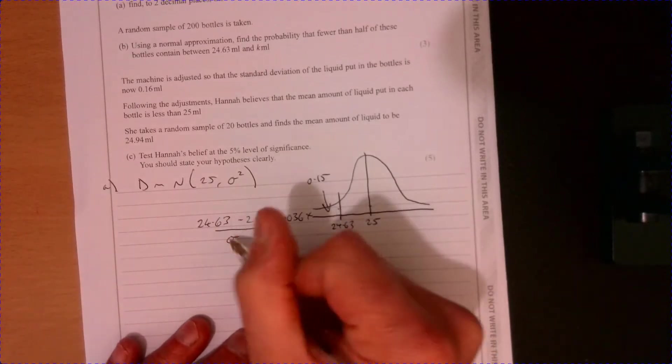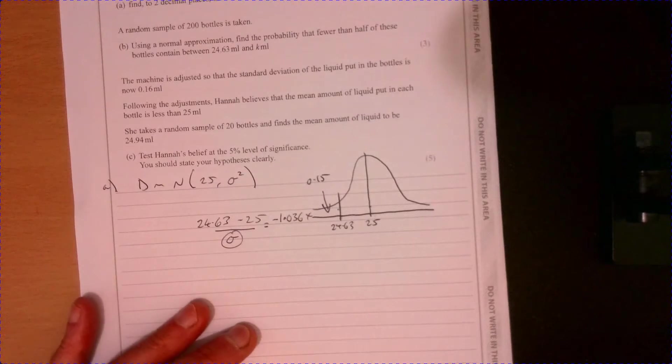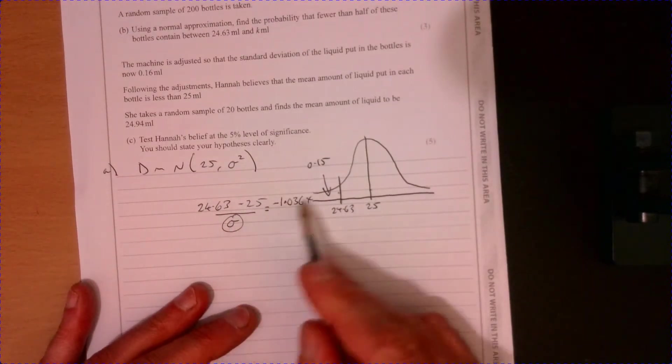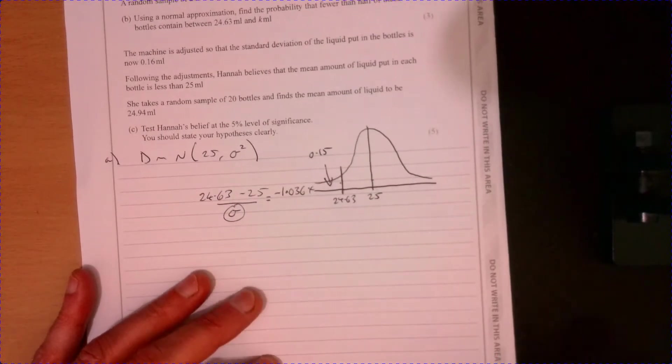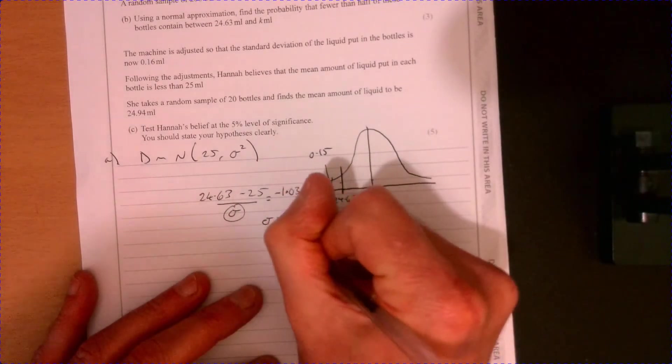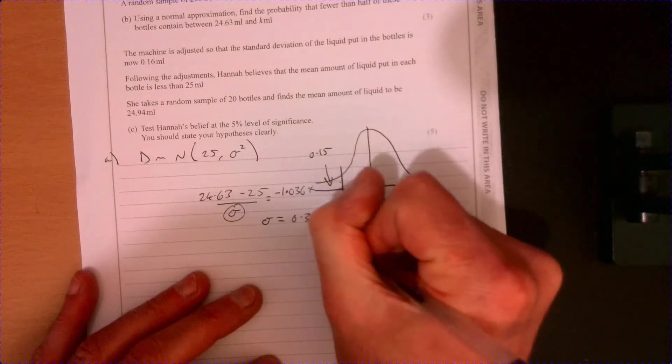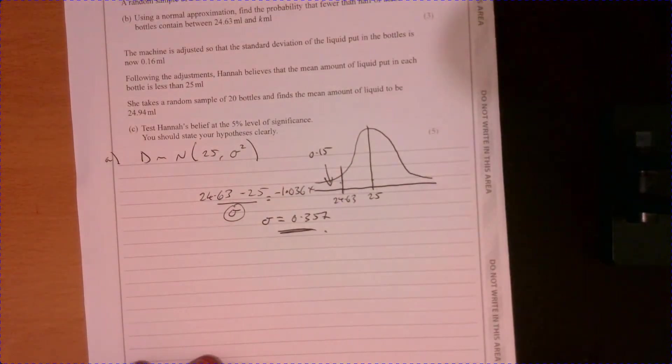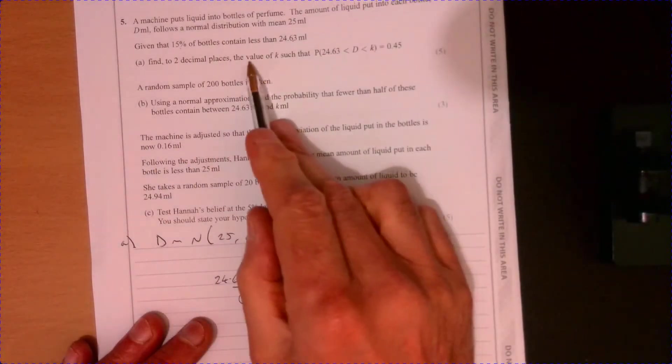From here, I can now work out what the standard deviation value is. Multiply by both sides. It's a simple bit of maths there. So you should be able to get standard deviation is 0.357. Now let's go back and actually see what the question is. Find two decimal places.